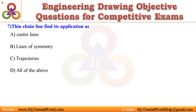Question 7. The chain line finds its application as: A. Center lines, B. Lines of symmetry, C. Trajectories, D. All of the above. Answer is All of the above.